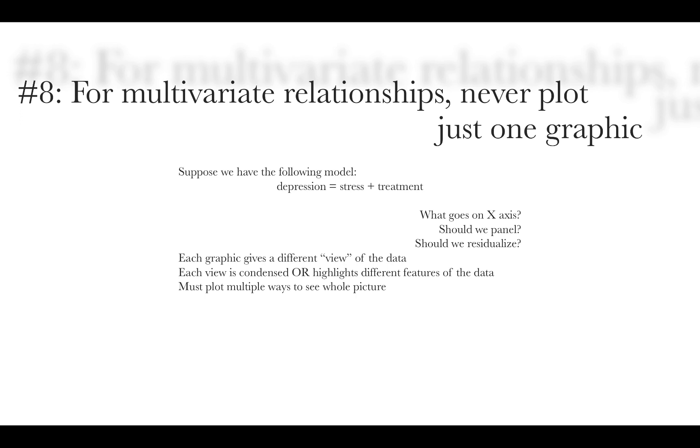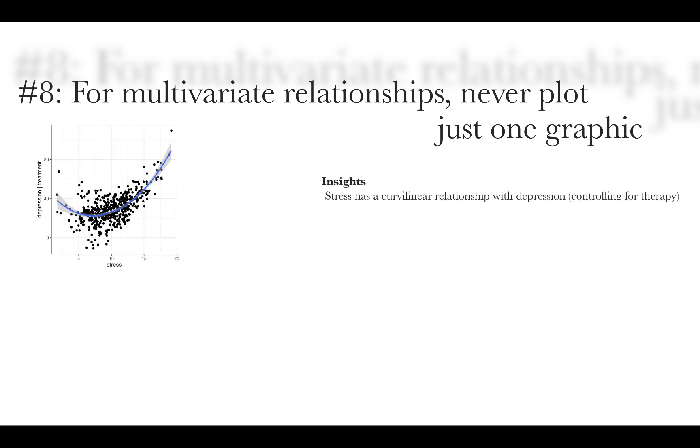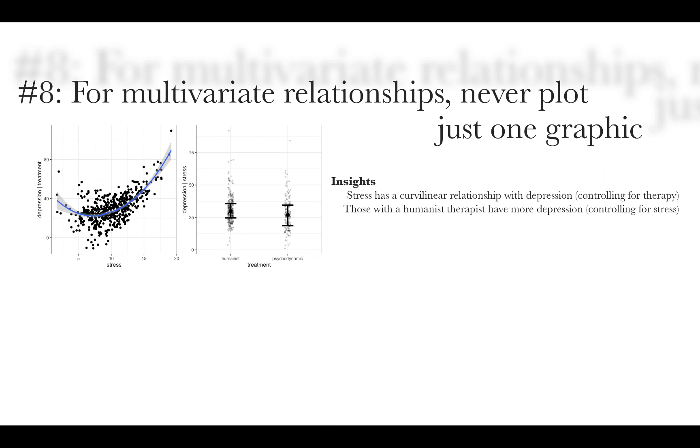So I'm going to show you four graphs that look at the exact same relationship just in four different ways. So here we are subtracting out the effect of treatment and then look at the relationship between stress and depression. And we find there's a curvilinear relationship. In the next one, we actually residualize the effect of stress and look at treatment. And we find that once you remove stress, clients with the humanist therapist are more depressed than those with the psychodynamic therapist.